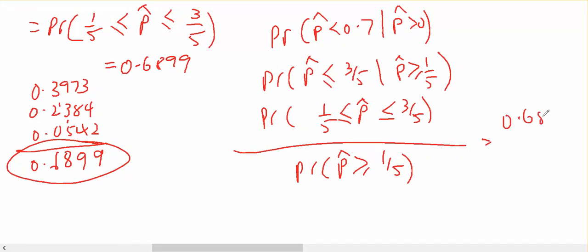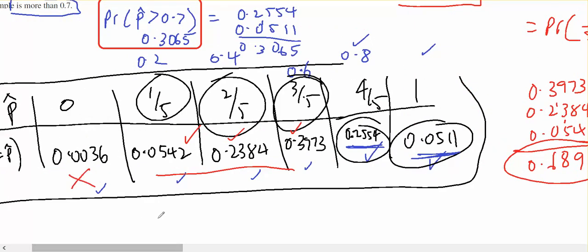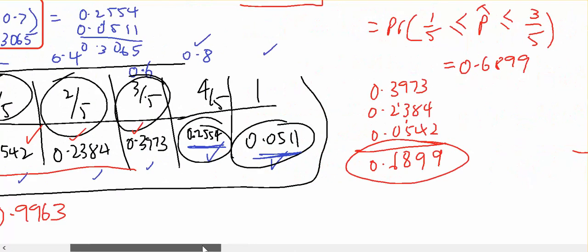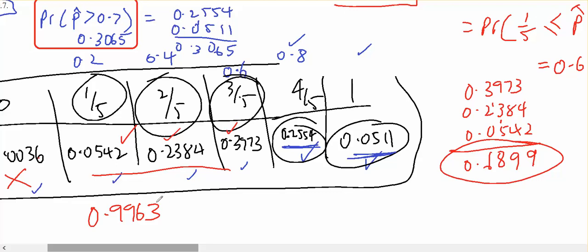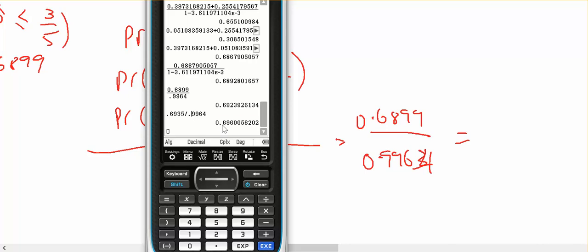0.6899 divided by everything except this one, so 0.9963, which equals 0.6960.